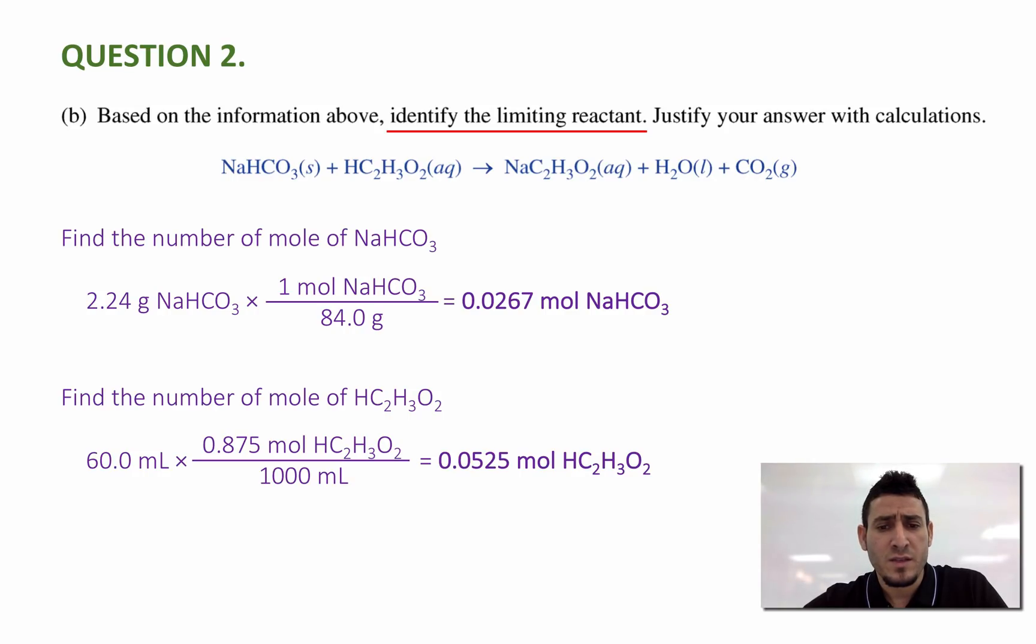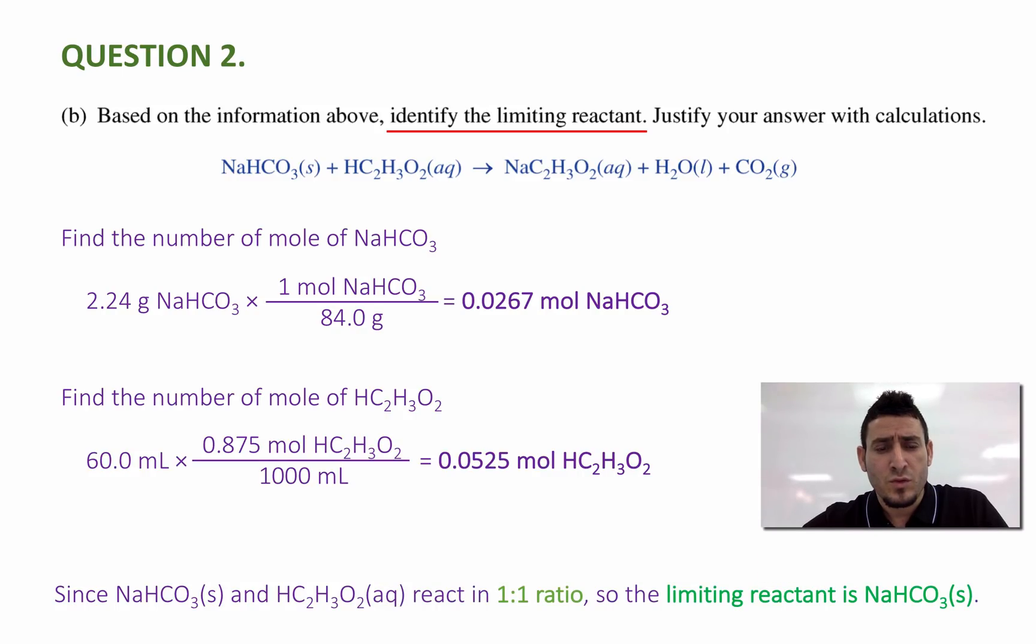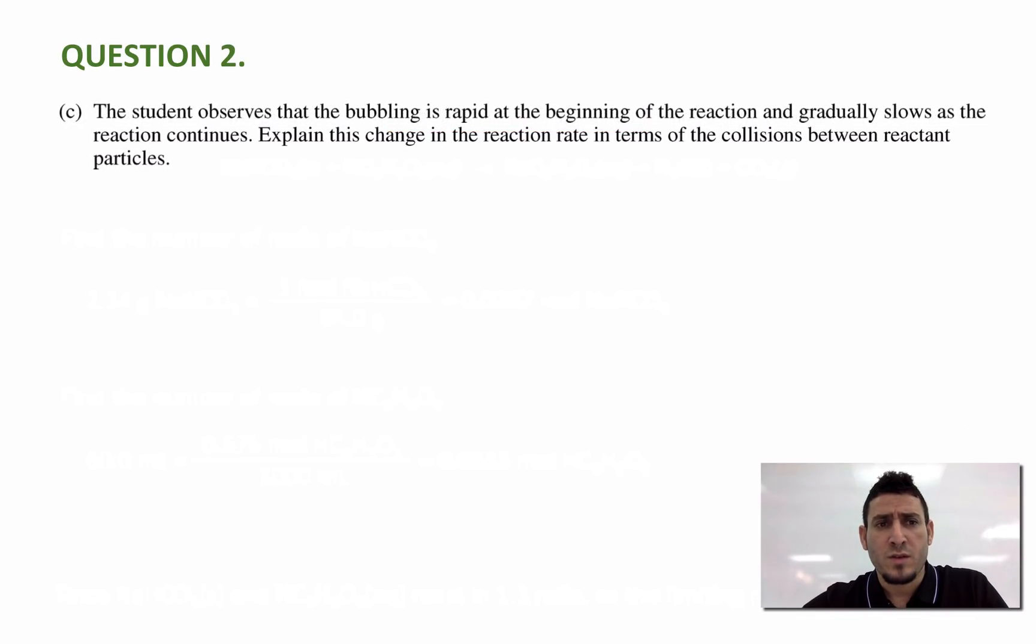And again, the answer is given in three significant figures. Since sodium hydrogen carbonate and acetic acid react in one to one ratio, the limiting reactant is going to be the one with the smaller number of moles. So in this case, it's the sodium hydrogen carbonate solid. Let's move on to the next question now.